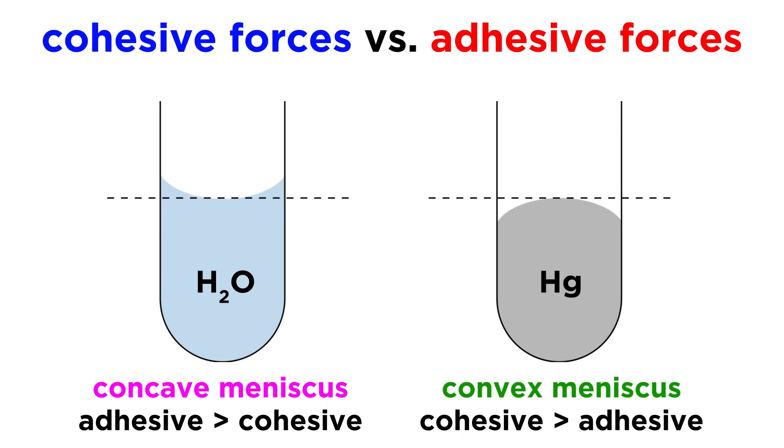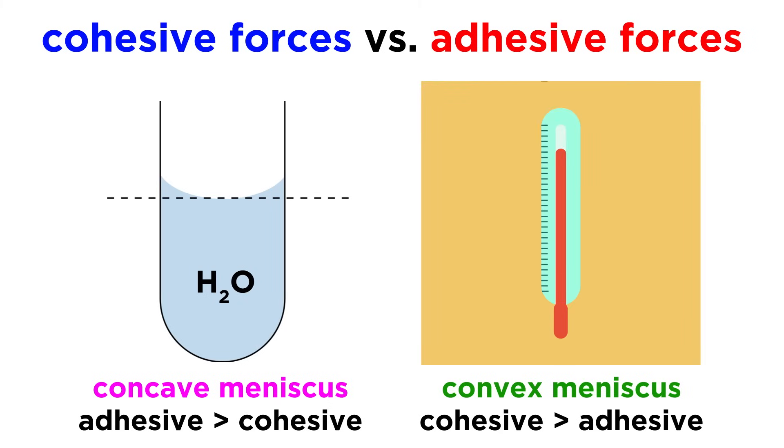If we try this again with mercury, it will look totally different. In mercury, the cohesive forces between the mercury atoms are stronger than the adhesive forces between the mercury and the glass, so mercury will form a convex meniscus, which is when the surface curves up like this. It will do this so as to minimize interactions with the glass, which in turn maximizes the interactions between the mercury atoms. This is why the mercury in a thermometer is curved in this manner.